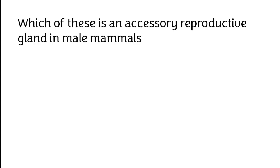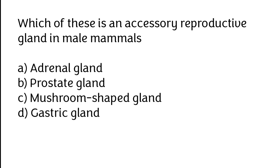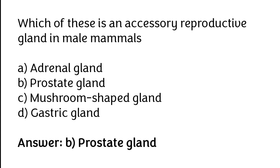Which of these is an accessory reproductive gland in mammals? A) Adrenal gland, B) Frosted gland, C) Mushroom-shaped gland, D) Gastric gland. The correct answer is option B — frosted gland.